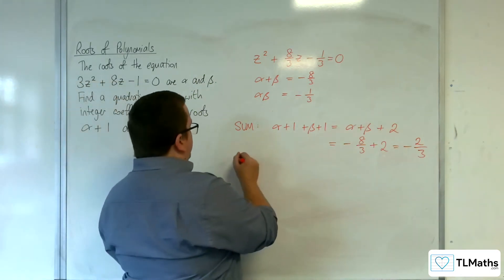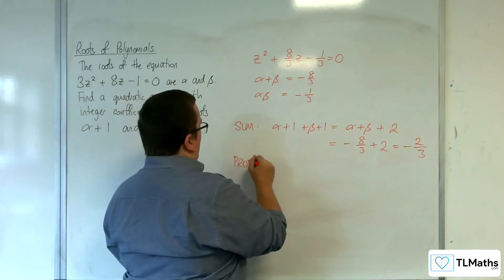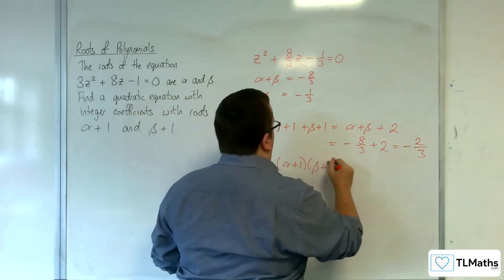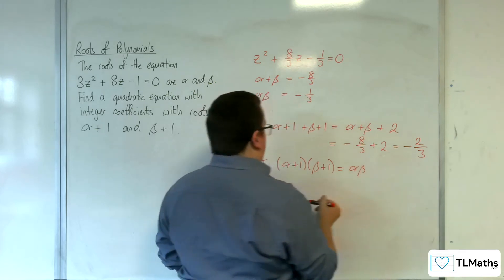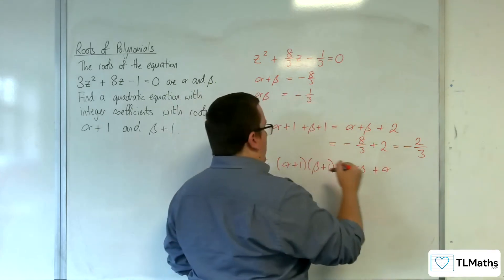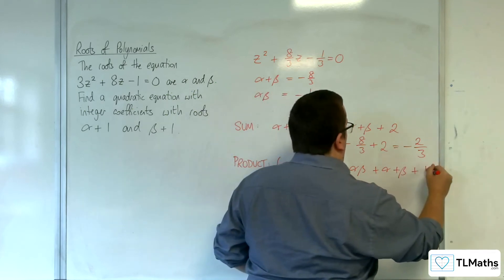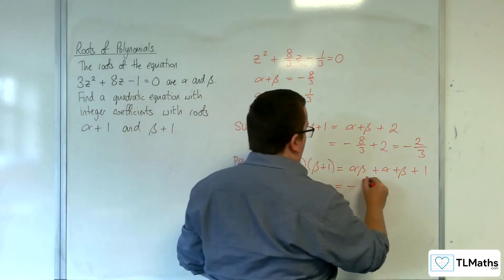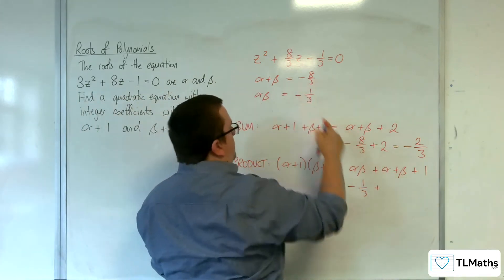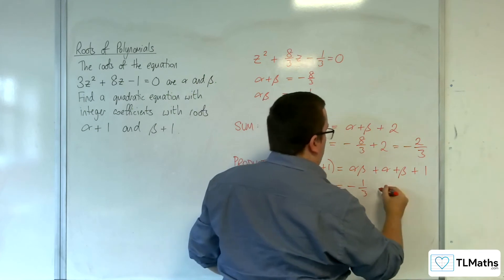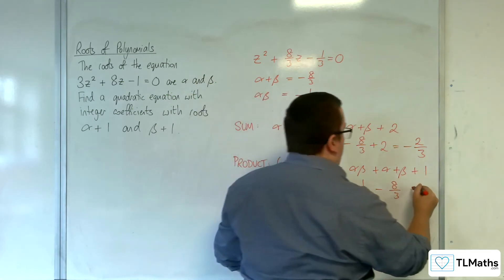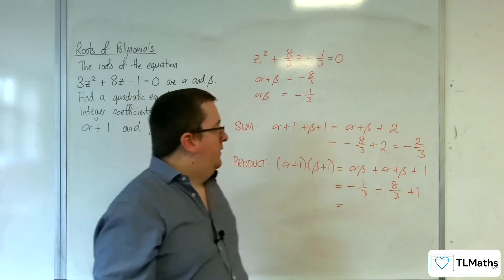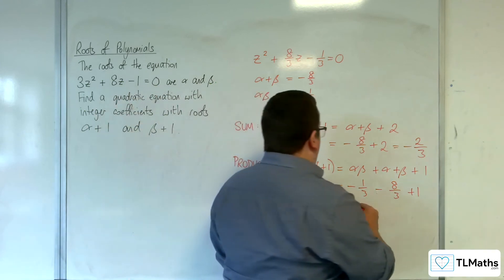As for the product, we need to multiply alpha plus 1 by beta plus 1. So you get alpha beta, then alpha and beta and 1. So you've got the alpha beta which is minus 1 third, the alpha plus beta which is minus 8 thirds, and you've got the plus 1. So minus 1 third take away 8 thirds is minus 9 thirds, so minus 3, plus 1 is minus 2.